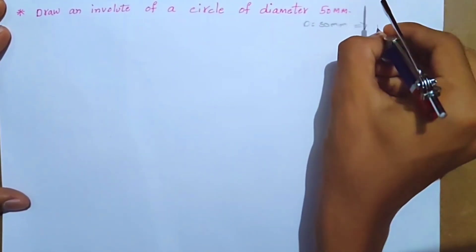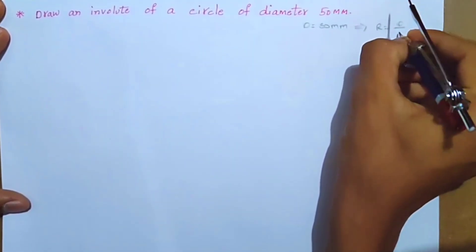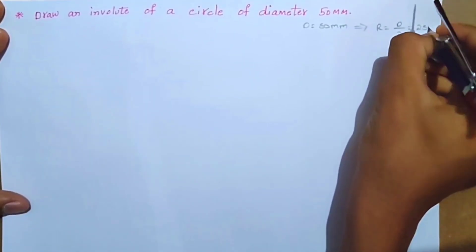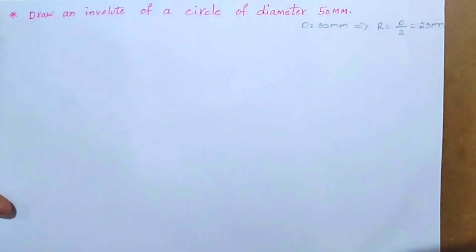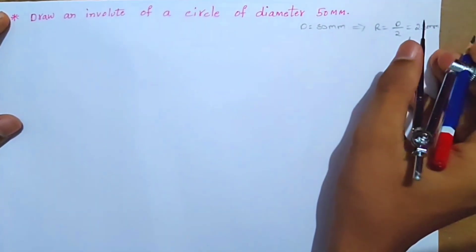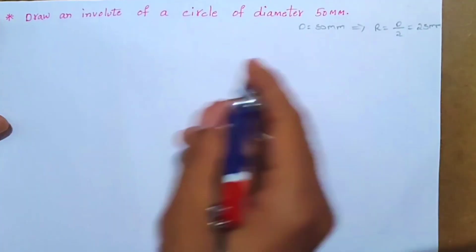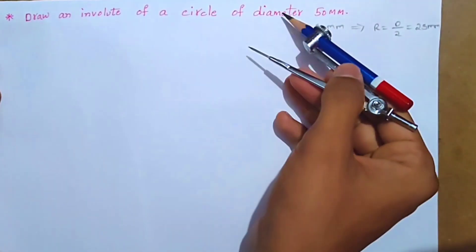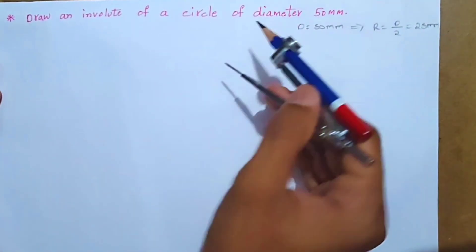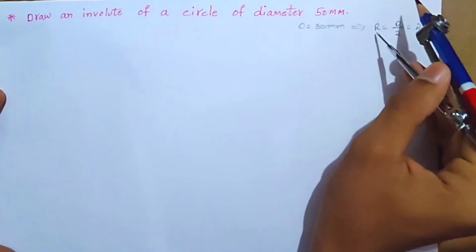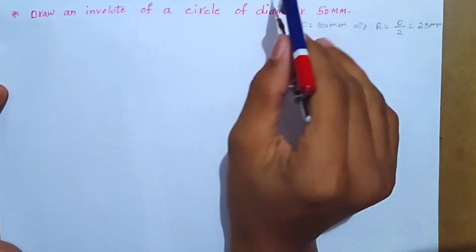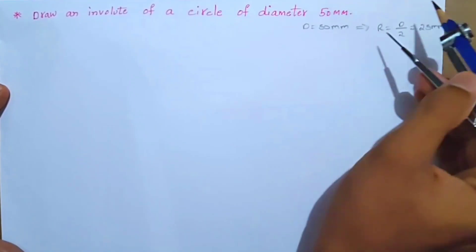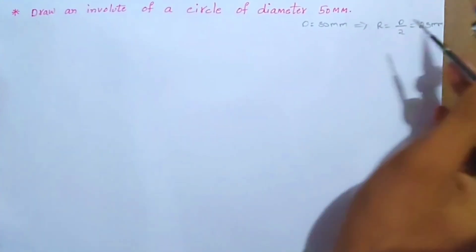Now we are going to show you the radius of 25mm. The radius R is equal to D divided by 2, which gives 25mm.